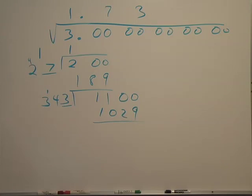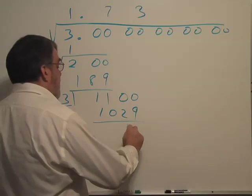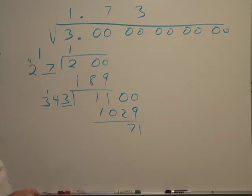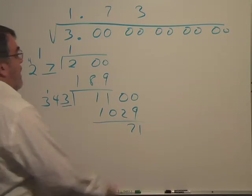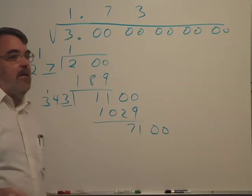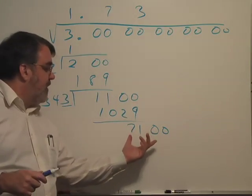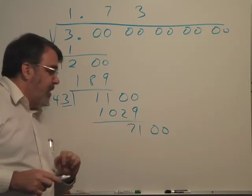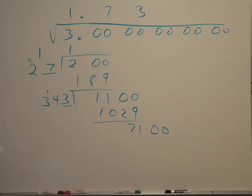Now we subtract, I get a 71, and again we bring down the next pair of zeros. So now my dividend is 7100, the divisor.